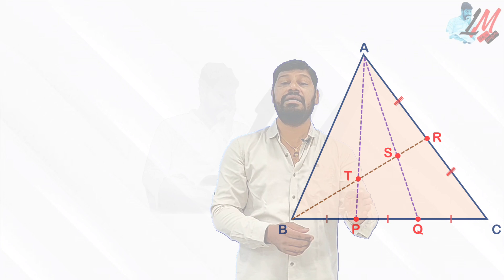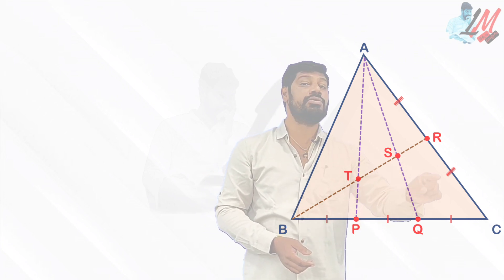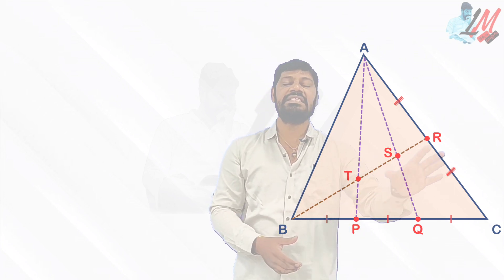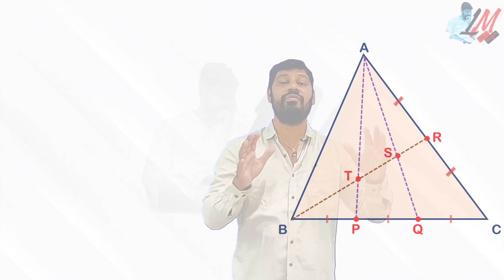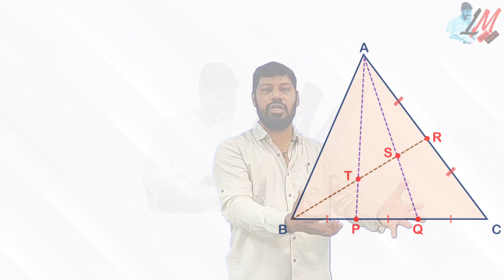So what do you mean by that? Suppose if I consider these two points are something like S and T, then what they are asking is what is the ratio of BT is to TS is to SR. So you are supposed to find out the ratio of these three segments. This is what we are supposed to find.